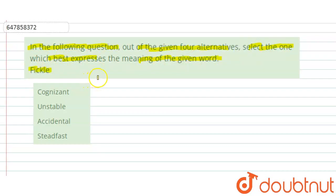Now you can see here we have a word given, which we have to find a synonym for. Basically, we have to find the same word, which means the same. And we are given four options: cognizant, unstable, accidental and steadfast.